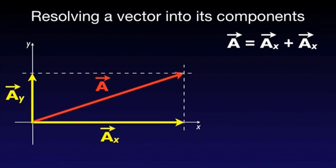It is obvious that the vector sum of AX and AY is A. Therefore, the components of any vector can be used in place of the vector itself in any calculations. Sometimes it is more convenient to use the components of a vector rather than the vector itself.